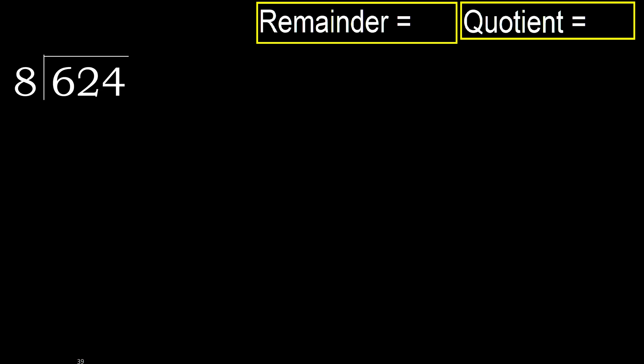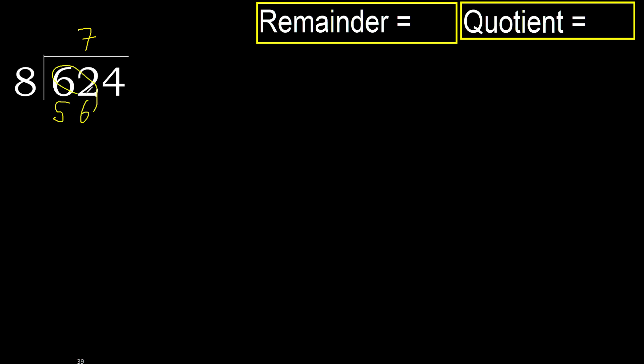624 divided by 8. 6 is less, therefore next. 62 is not less, therefore with 62: 8 multiplied by which number is nearest to 62 but not greater? 8 multiplied by 8 is 64, which is greater. Multiply by 7: 56, which is not greater. Okay, subtract: 62 minus 56 is 6. Next.